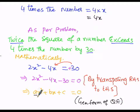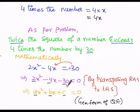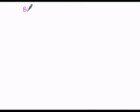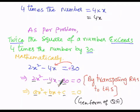The x² coefficient in the general form is a, and in our equation it is 2. The x coefficient in the general form is b, and in our equation it is −4. The constant in the general form is c, and in our equation it is −30. So by comparison: a = 2, b = −4, c = −30.